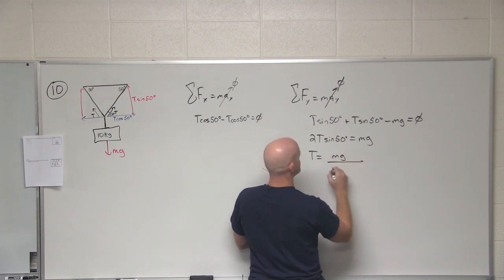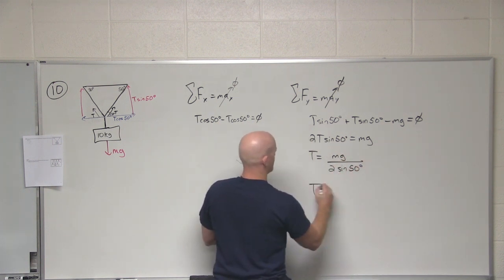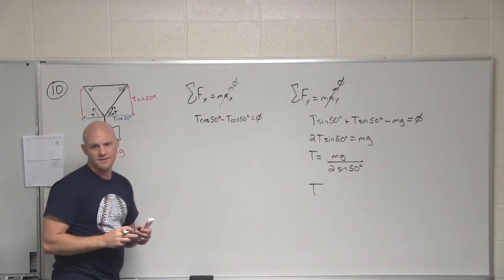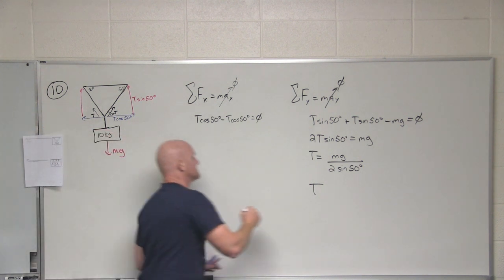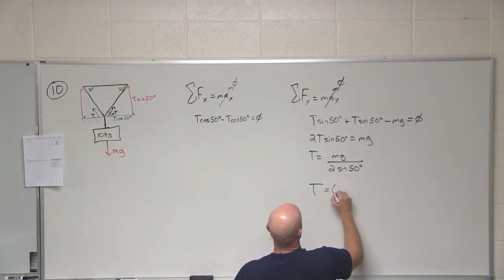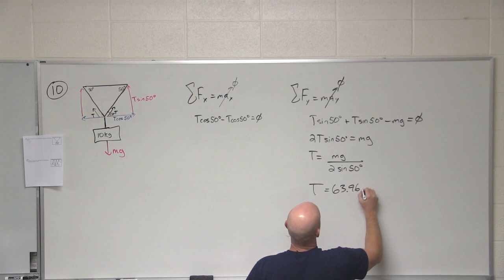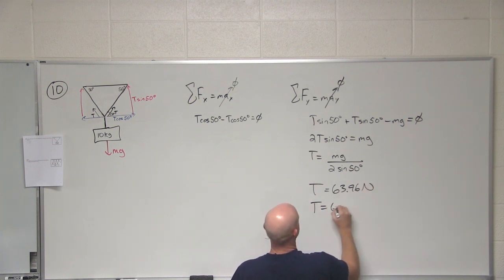Our tension therefore equals mg over 2 sine 50. Can anybody get me that tension? 63.96 newtons. We'll just round that to 64 newtons. Excellent.